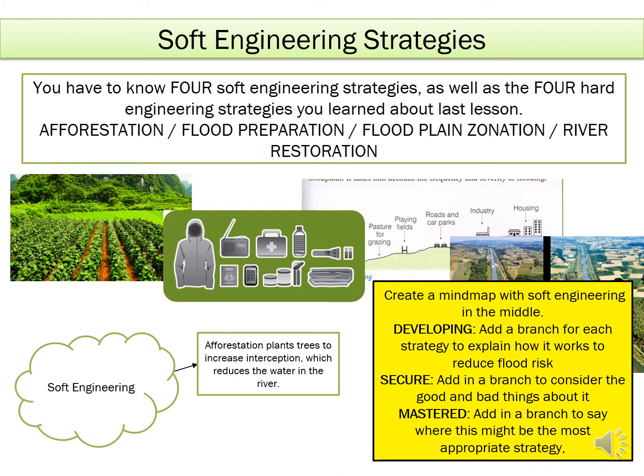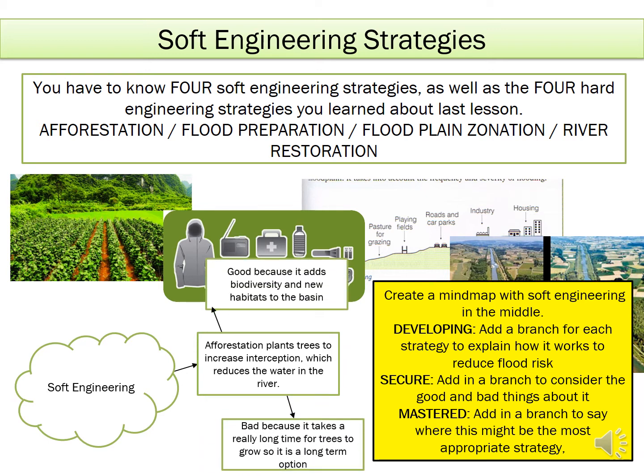For secure, you will then add a branch which includes a positive and a negative thing about each strategy. For example, it's good because you have biodiversity with new habitats, but it's bad because it takes a really long time for trees to grow, so it's a long-term solution to flooding.